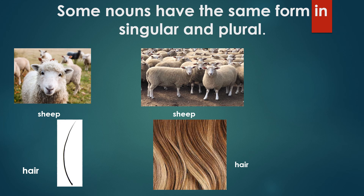The last rule is: some nouns have the same form in singular and plural. One sheep, many sheep. One hare, many hare. Children, even in the plural form the spelling does not change. One sheep, S-H-E-E-P; many sheep, S-H-E-E-P. One hare, H-A-I-R; many hare, H-A-I-R.